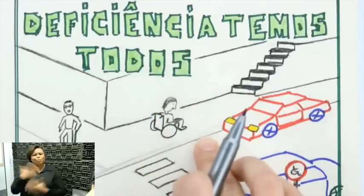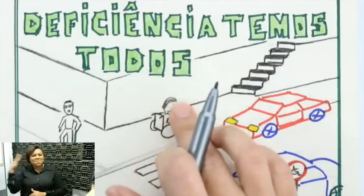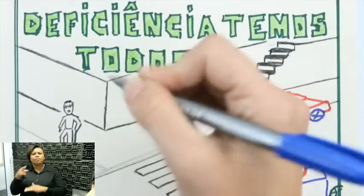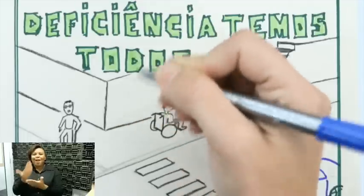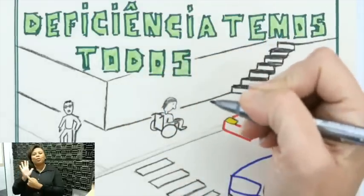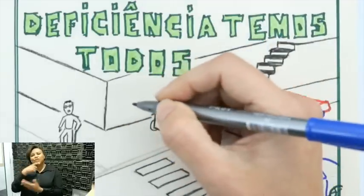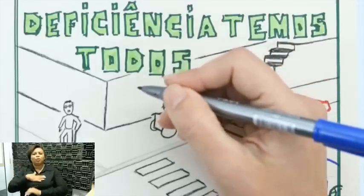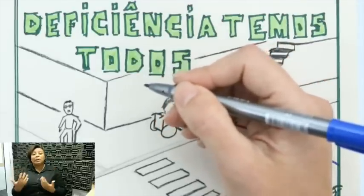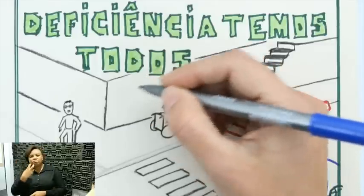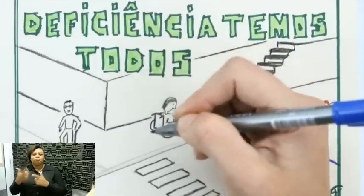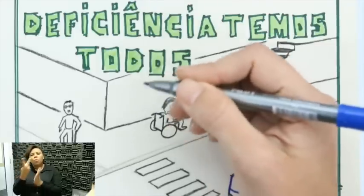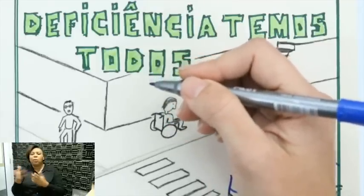As aulas do Me Salva são famosas por ter muitas imagens — a gente chama carinhosamente de aula da mãozinha. Para as pessoas que não enxergam, muitas vezes a gente escreve palavras-chave ou desenha alguma coisa e isso acaba não sendo acessível para essas pessoas.